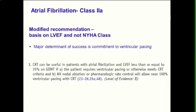What about atrial fibrillation? Very few data here. In fact, the very first CRT trial, MUSTIC-AF, approximately 15 years old in design, is the only randomized trial to address this. But recommendations recognize that many patients do benefit — however, they have to be committed to ventricular pacing. Patients with atrial fibrillation often have fusion and reduced levels of ventricular pacing, so there's no point implanting a biventricular device if it's not going to pace effectively. The new guidelines suggest CRT can be useful in AF patients if the patient requires ventricular pacing or otherwise meets CRT criteria, or if they require AV nodal ablation or pharmacological rate control to commit them to almost 100% ventricular pacing.